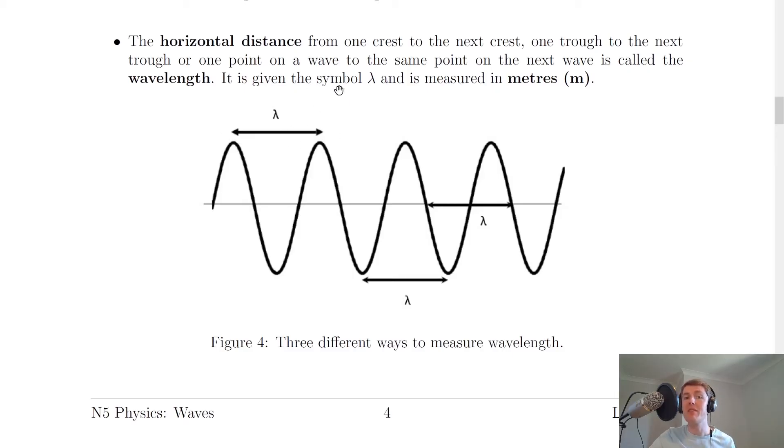And wavelength can be given the symbol lambda. So this is a Greek letter and it's measured in meters because it's a length. So remember a length or a distance is going to be measured in meters. That's the standard SI unit for a distance. So if we go from one crest to one crest, that is one wavelength.